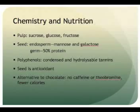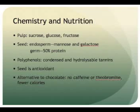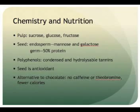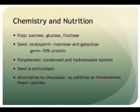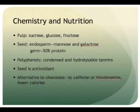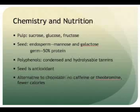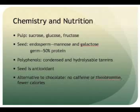The two parts of the carob pod have different chemical compositions. The pulp is predominantly composed of sucrose, glucose, and fructose, with minimal protein and fat. The seed is split into two parts: the endosperm, which is mannose and galactose, and the germ, which is 50% protein. It is the germ that contains the majority of the fruit's polyphenols. It contains a large amount of both condensed and hydrolyzable tannins. Extensive processing is required to remove this compound. However, it is the tannins that provide the antioxidant capabilities of the fruit.